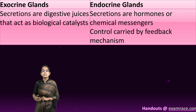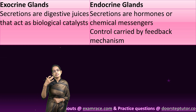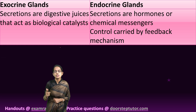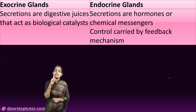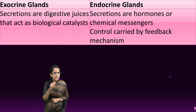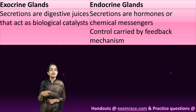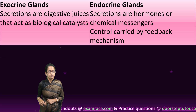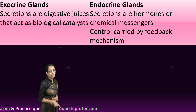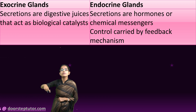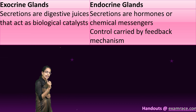In an endocrine gland, the secretions are hormones — chemical messengers that affect the target cell. All control is done by a feedback mechanism. For example, if the body runs sugar deficient, the body would secrete higher amounts to cope with the sugar deficiency — this is what is known as a feedback mechanism. There is a continuous feedback mechanism governed by chemical messengers.